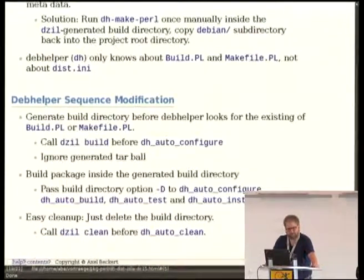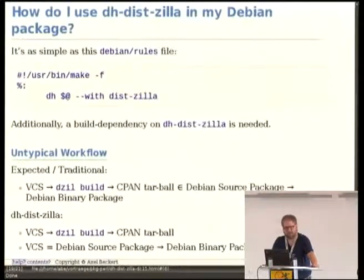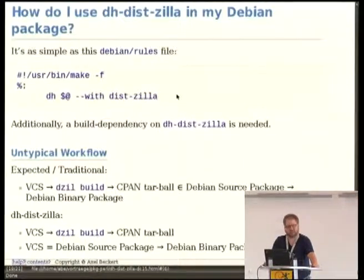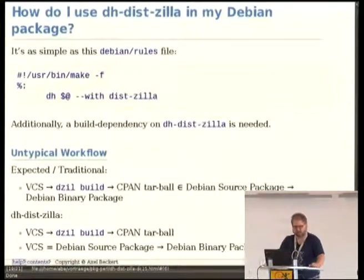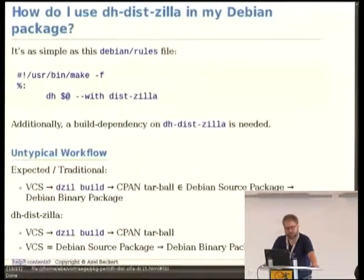So it's quite a small DebHelper plugin but does what is needed. How does it look like if I use DH Distiller in my Debian package? It's as simple as adding --with Distiller. Then DebHelper knows to load that module, which fiddles around a little bit with the sequences, and it finds dist.ini and just does the right thing.